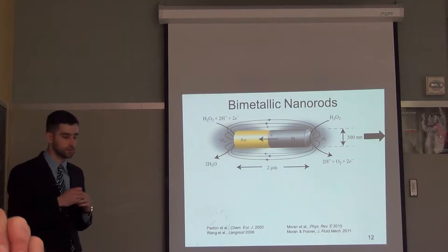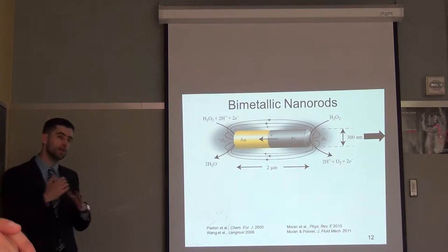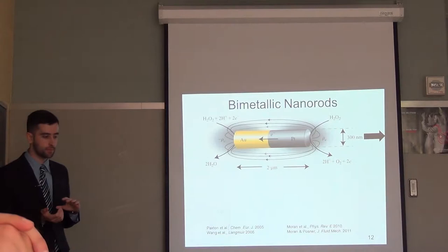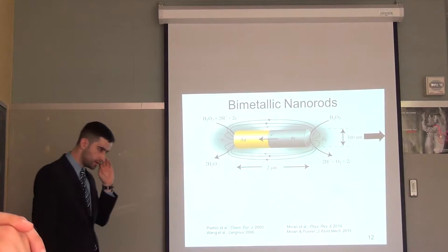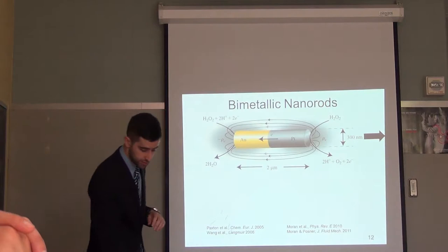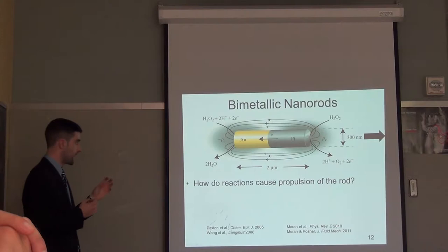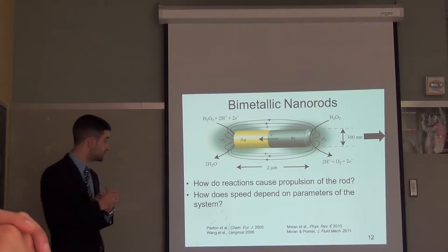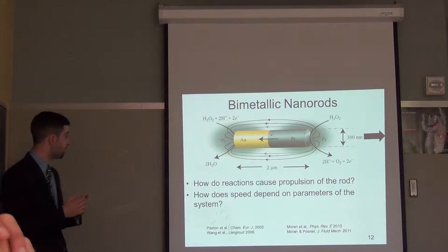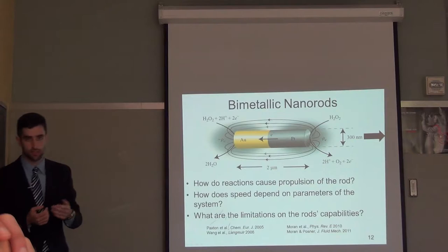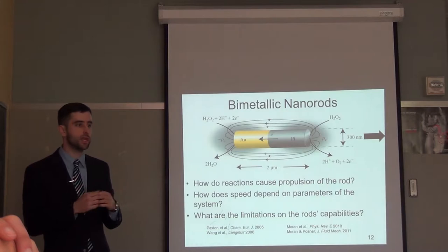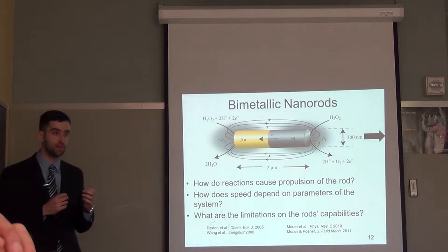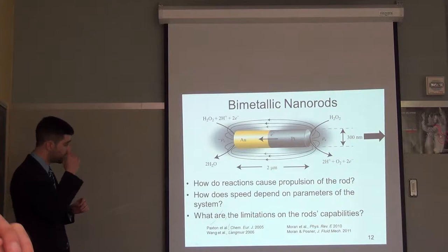Theoretical analyses of these rods have been primarily qualitative. No one has tried yet to derive a truly quantitative, rigorous understanding of the motion. The questions I want to answer today are: first, what's the causal chain between the electrochemical reactions and the motion of the rod? How do the reactions lead to propulsion? How does the speed scale with parameters such as peroxide concentration, conductivity, viscosity, or surface charge or reaction rate? And finally, what are the important limitations on the rod's capabilities? One of the most important limitations noticed experimentally is that adding salt and increasing conductivity leads to a decrease in swimming speed.